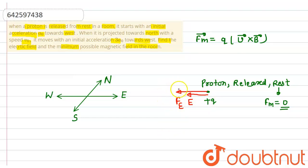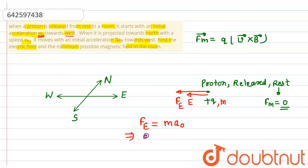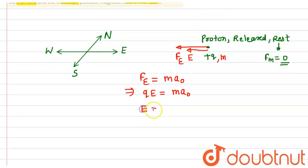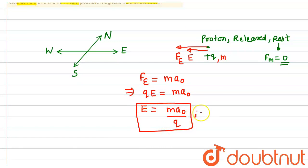Since the particle starts to move towards west, the electrostatic force acts in the west direction, and it means the electric field is also in the west direction, because electrostatic force acts on a positive charge in the direction of electric field. If the charge particle has mass m, it has attained acceleration a0 towards west. So electrostatic force equals m times a0, which equals Q times E, giving the magnitude of electric field as ma0/Q, directed towards west.